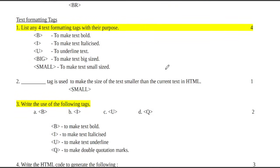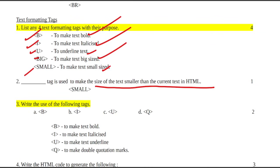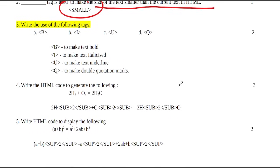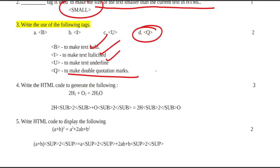Here we are going to talk about text formatting tags. B is bold, I is italicized, big is big size and small is small size. The small tag is used to make the text size smaller. Then the B tag is used to be bold, I is italicized, and Q is double quotation mark.